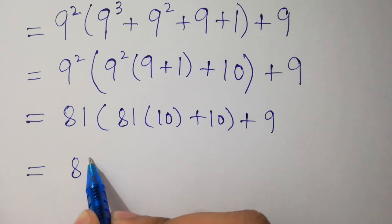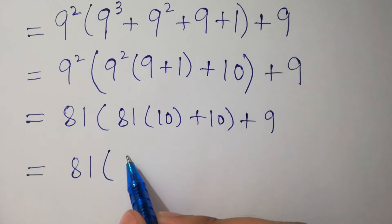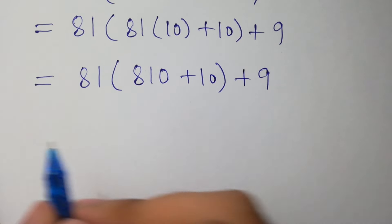Next step, 81 as it is, 81 times 10 equals 810, plus 10, close bracket, plus 9.